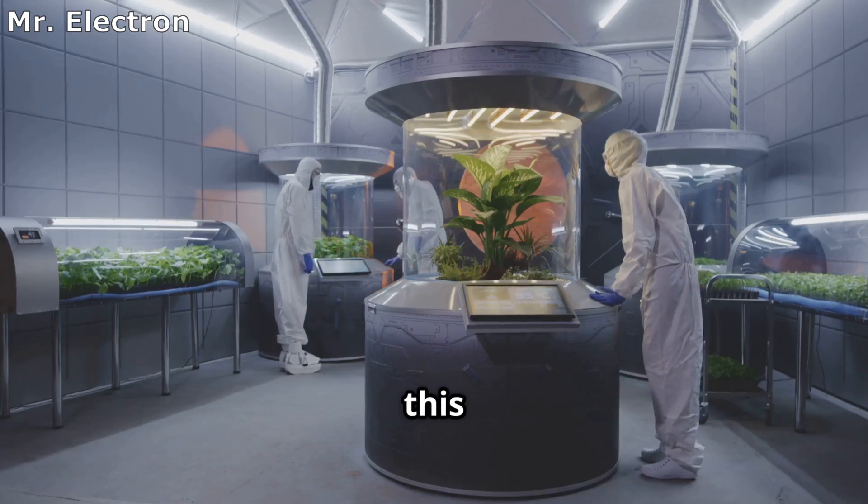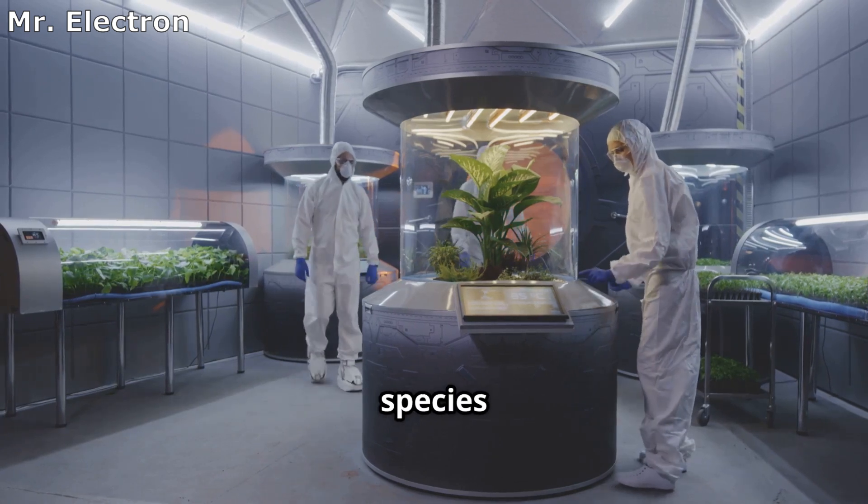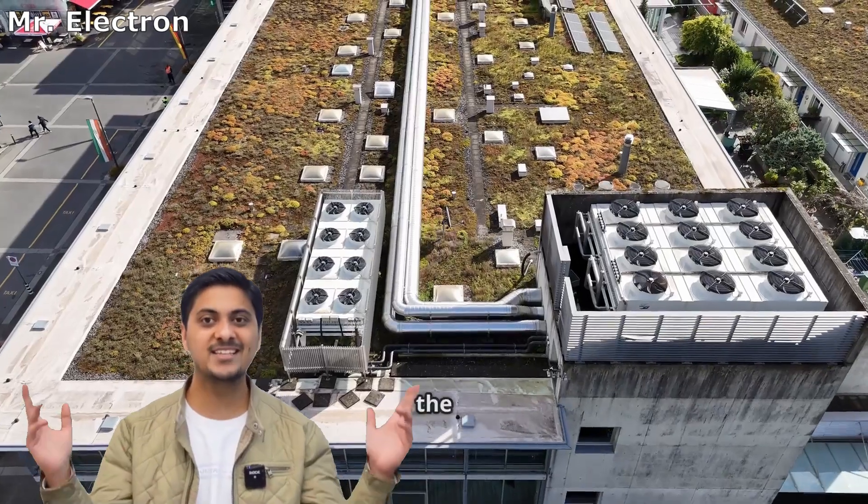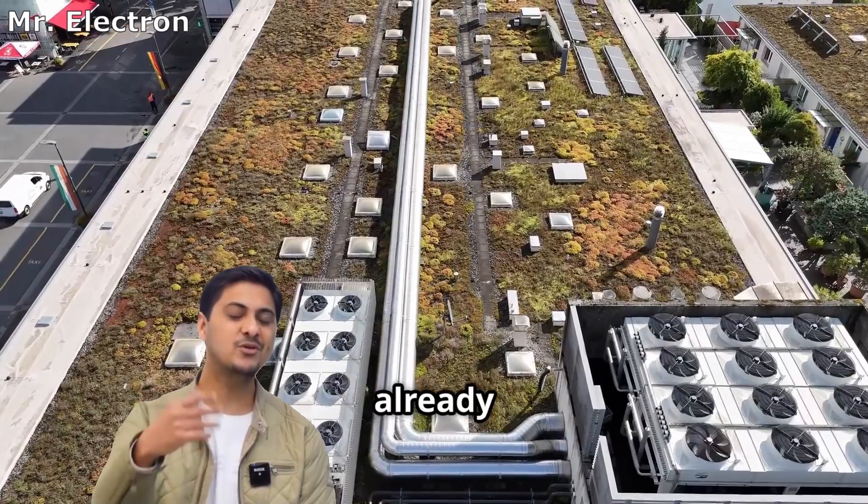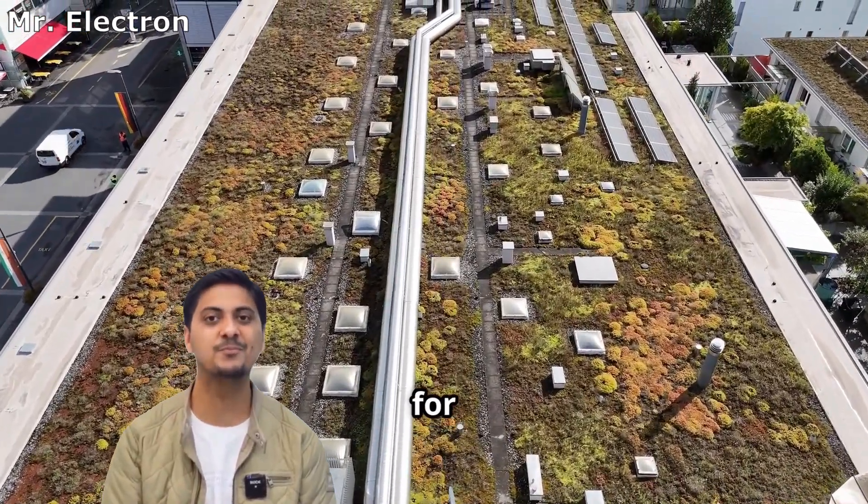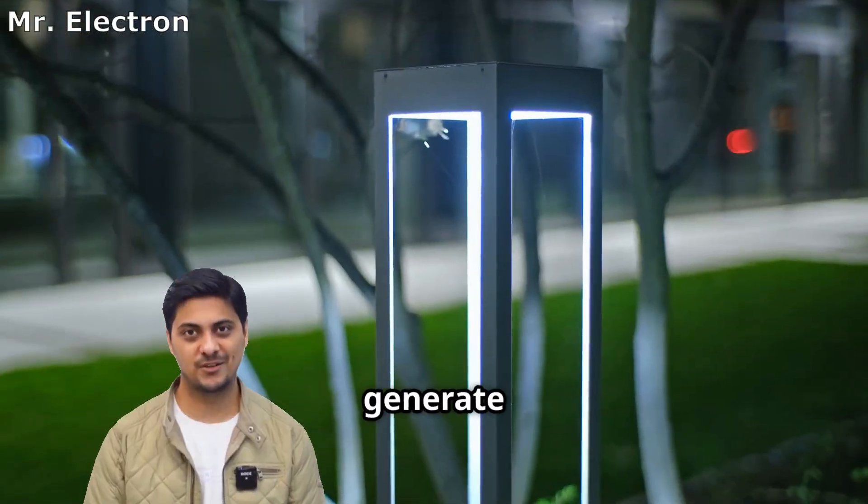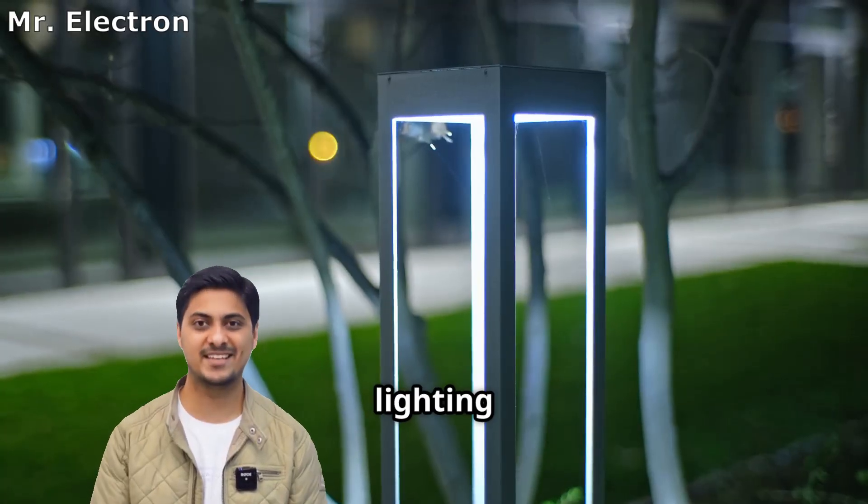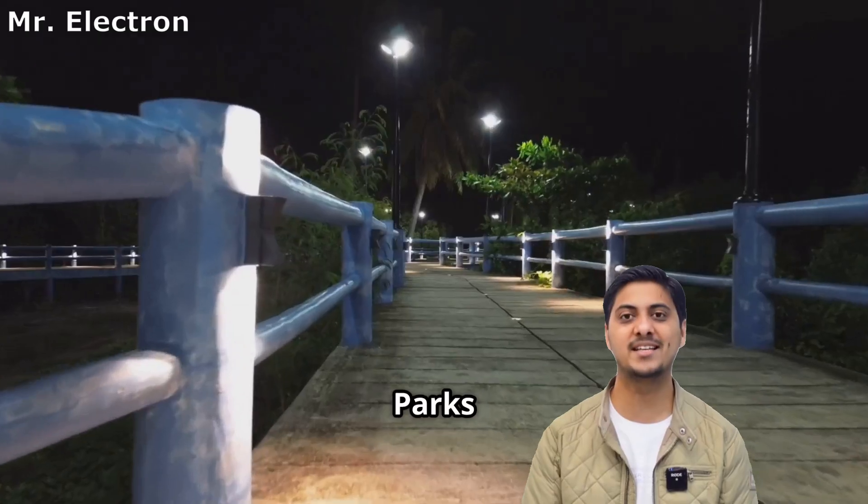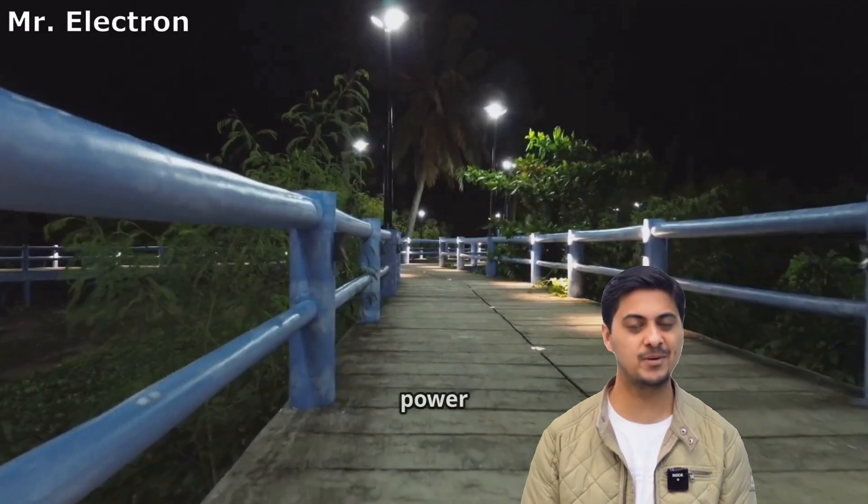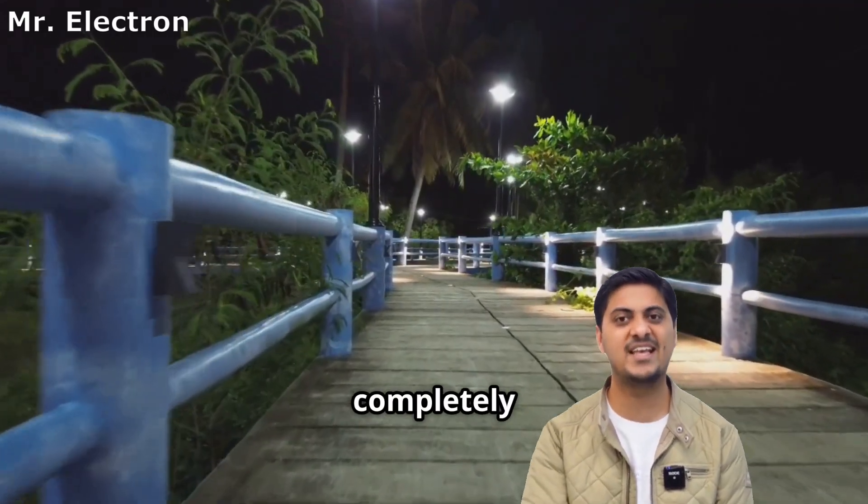Scientists have tested this technology on dozens of different plant species worldwide. A company in the Netherlands called PlantE already sells commercial systems for buildings. Their modular panels generate enough power for outdoor lighting and Wi-Fi hotspots. Parks in Europe use this technology to power walkway lighting completely off-grid.